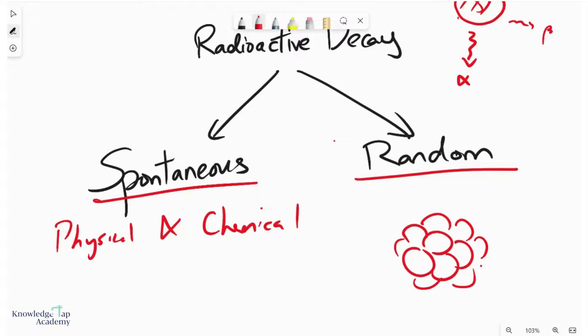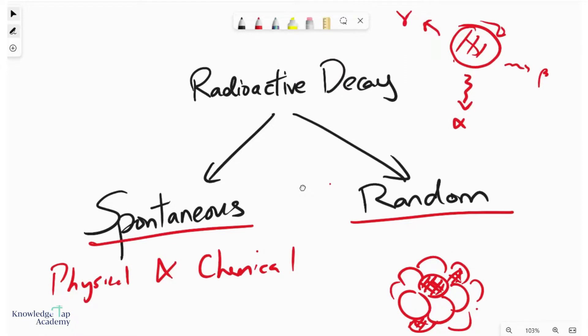If I watch this decay over time—this one goes, then that one goes, then maybe this one—there is no way to predict which one will go next because there is no pattern. It is completely random. Radioactive decay is a process that is both spontaneous and random.